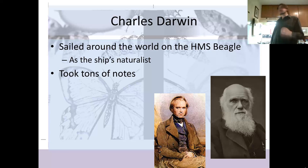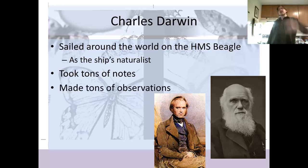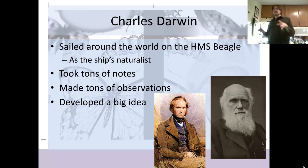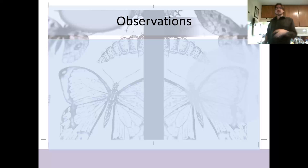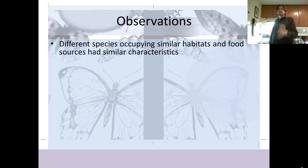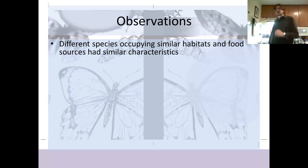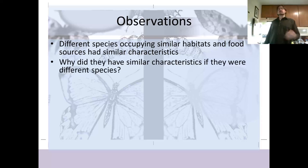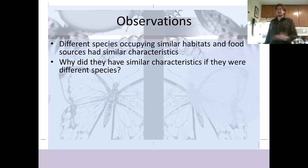As the naturalist, he took tons and tons of notes on everything, made tons of observations — painstakingly written out so that other scientists could see what he saw. During the course of taking all these notes and observations, he developed a big idea, and that idea is evolution. His observations were that different species occupying similar habitats and food sources had similar characteristics. Animals that ate the same type of food in the same type of habitat tended to have similar adaptations, which was pretty interesting. Why should they have similar characteristics if they're different species?